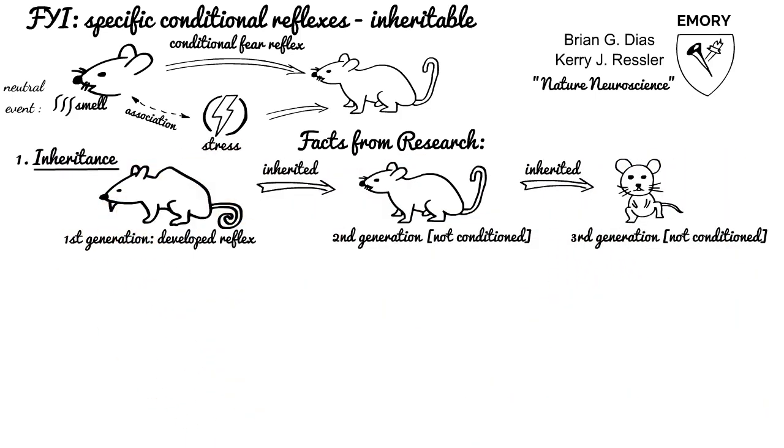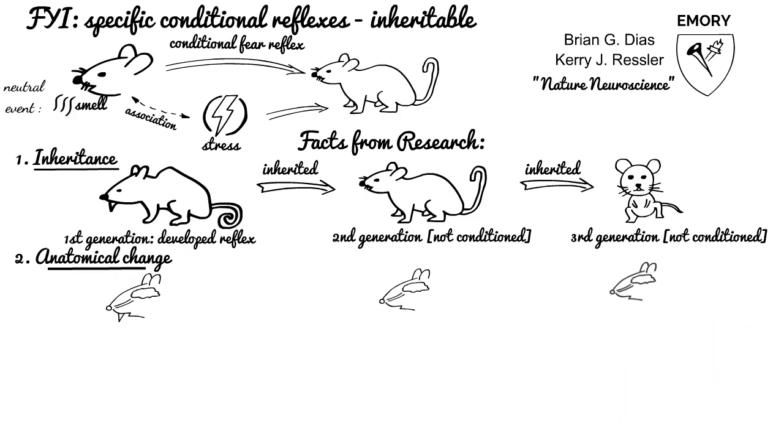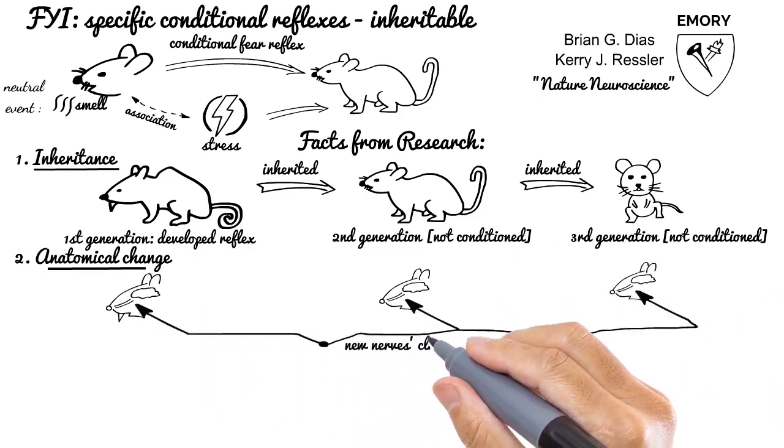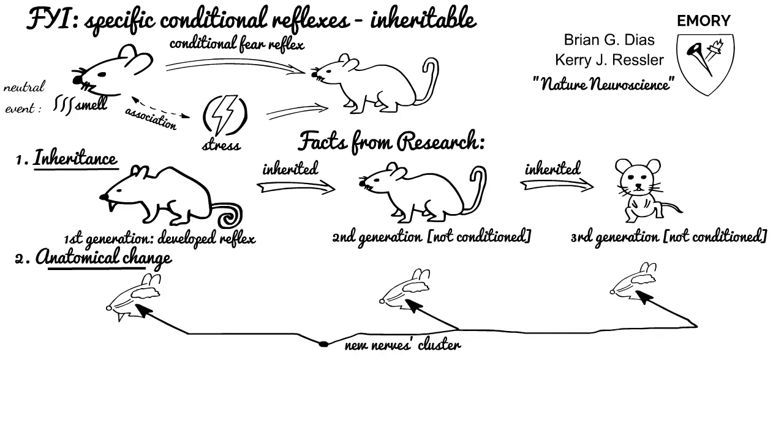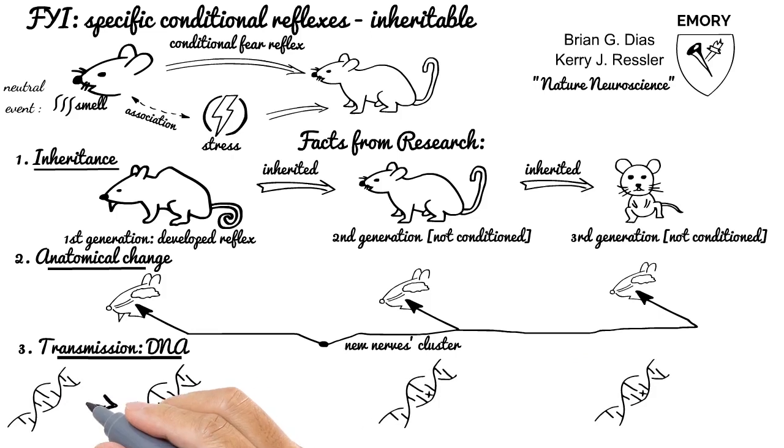All three mice generations, including initial one which was conditioned, have anatomical structure change. New cluster of nerves which are accountable for odor signal to be transmitted to the brain appeared, developed in mice bodies. Information of such anatomical change was transmitted via modified DNA. Please take your time to learn about DNA in biology-related resources to understand how information from parents is shared to their kids, if you are interested.